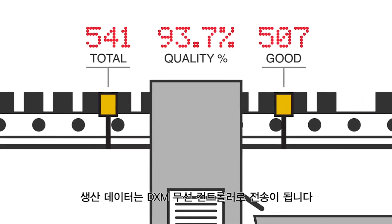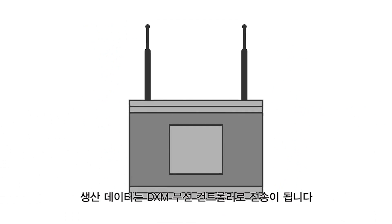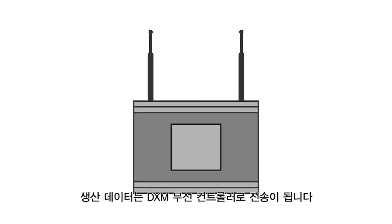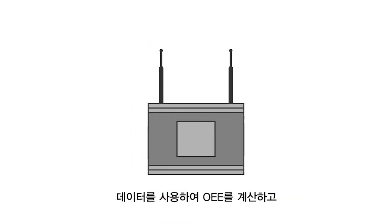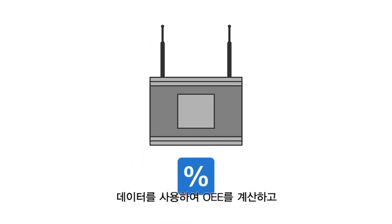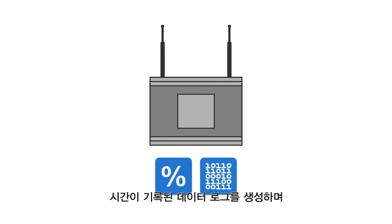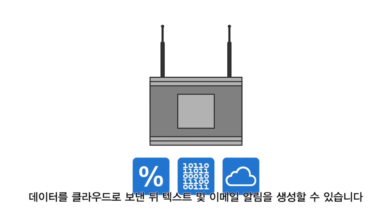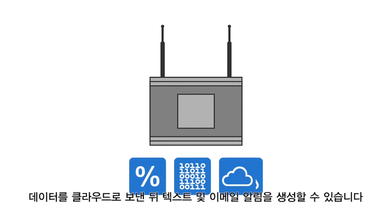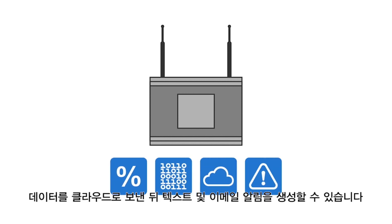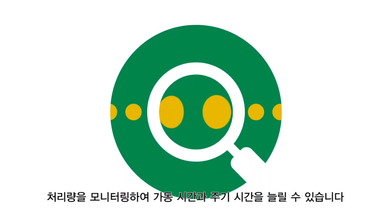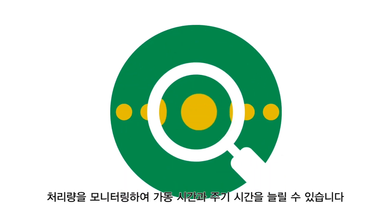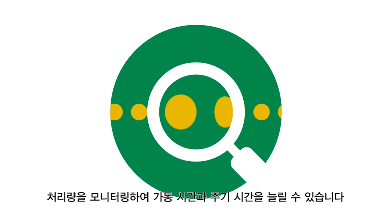The production data is sent to the DXM wireless controller. It can use the data to calculate OEE metrics, generate time-stamped data logs, send data to the cloud, and generate text and email alerts. Monitor throughput to increase uptime and cycle time.